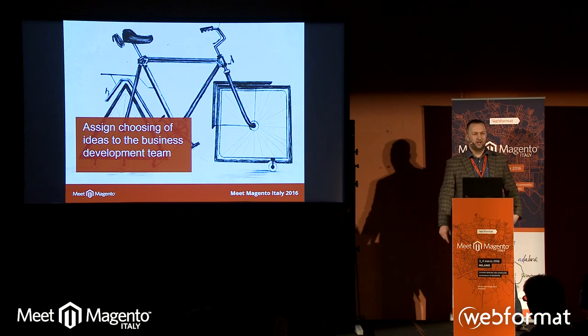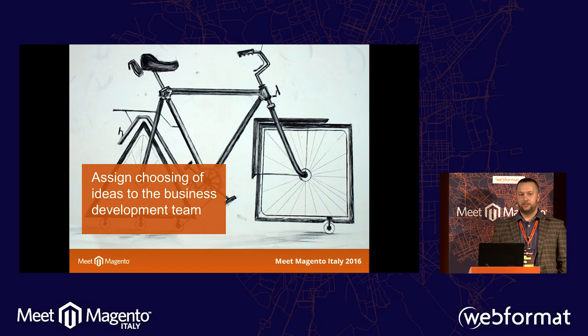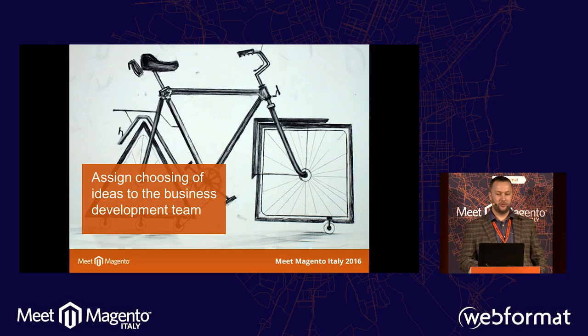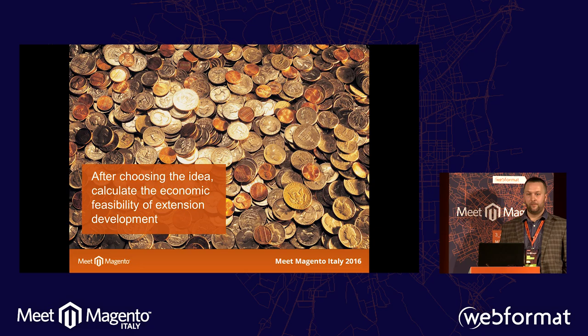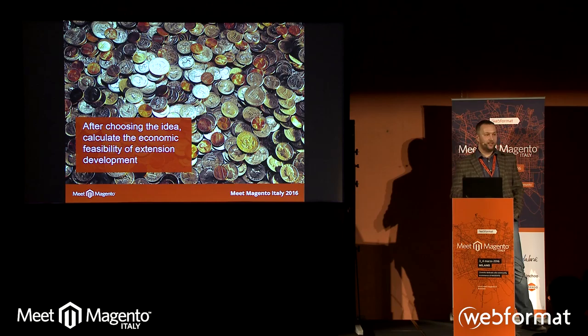Let's start from choosing an idea. I'm often asked what extension to develop and it's really a hard question, because I think it's really hard to predict if the extension will be successful on the market. That's why we delegate this task to the business development team. The business development team must analyze the current market situation, define critical user problems which must be solved, and prepare technical requirements for development. These technical requirements are then brought to the development team to estimate, and you must stop and think over if the cost of development satisfies you. If not, you must refuse this idea for a commercial extension.